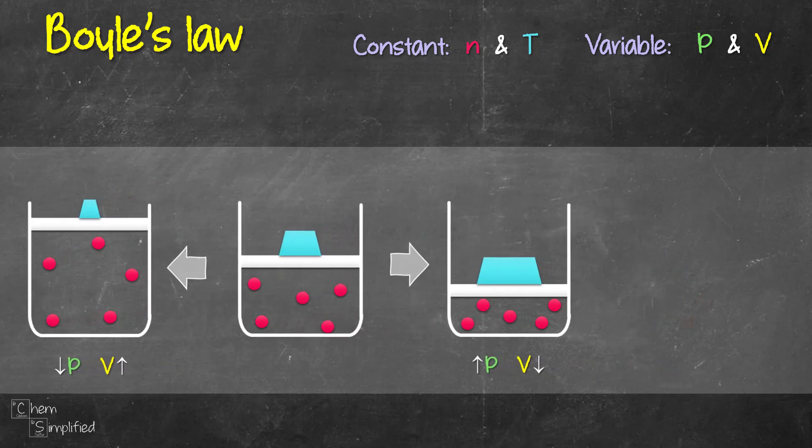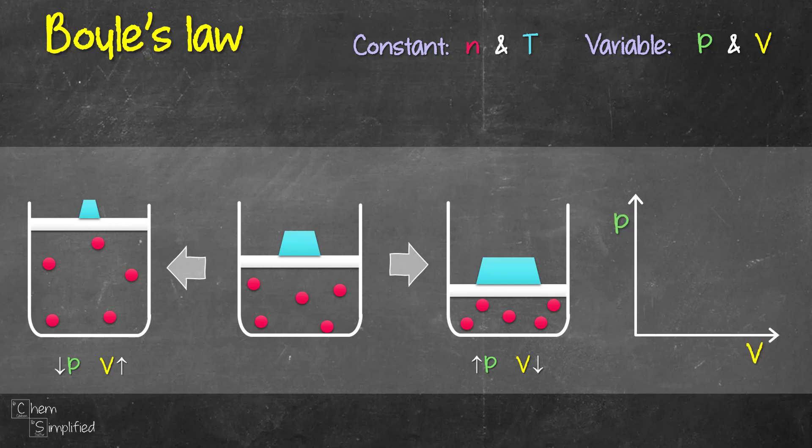From the experiment, we can see that the pressure is inversely proportional to the volume. In other words, volume behaves in the opposite direction as the pressure. So if we decrease pressure, volume will increase.